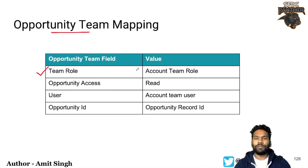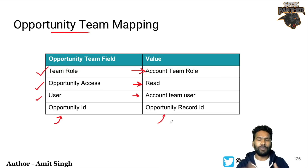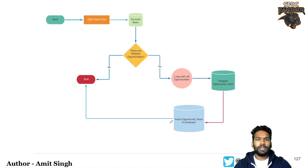The fields we are mapping are: team role — equivalent to whatever the team role is on the account team; opportunity access — read/write (edit); user ID — the user added in the account team; and opportunity ID — the record ID of the opportunity. Since we may have multiple opportunities under a particular account, we will loop through them one by one, adding the opportunity ID for each team role.